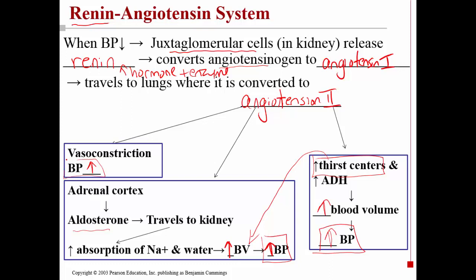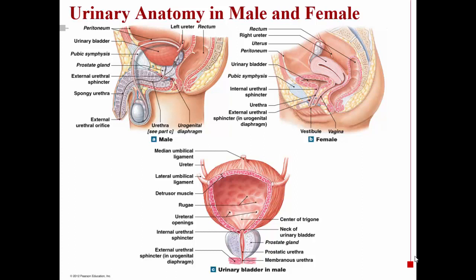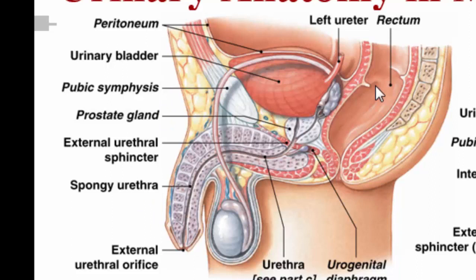Let's now compare the anatomy of the urinary system between the male and the female. In the male anatomy — this is a lateral view after a sagittal section — you can see the rectum and anus, and then the bladder. As the kidney produces urine, it travels down through the ureter into the bladder, and from the bladder it travels out through the urethra.